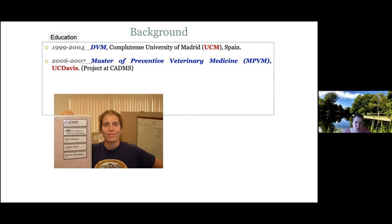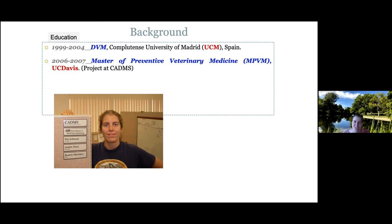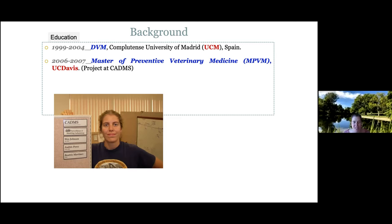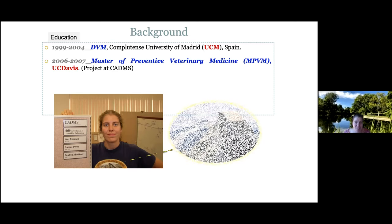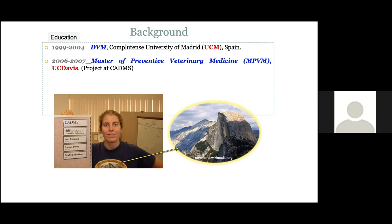I was offered a PhD in Madrid, but one of my co-advisors was from UC Davis and highly encouraged me to do a master's here. So I did a break in my PhD and came to Davis to do the master's in preventive medicine, working with people like Wes Johnson, a Bayesian statistician, and Andres Perez, a well-known epidemiologist. I really enjoyed it — not only because of the nature and outdoor opportunities, but also the master's itself. It was a truly transformative experience.